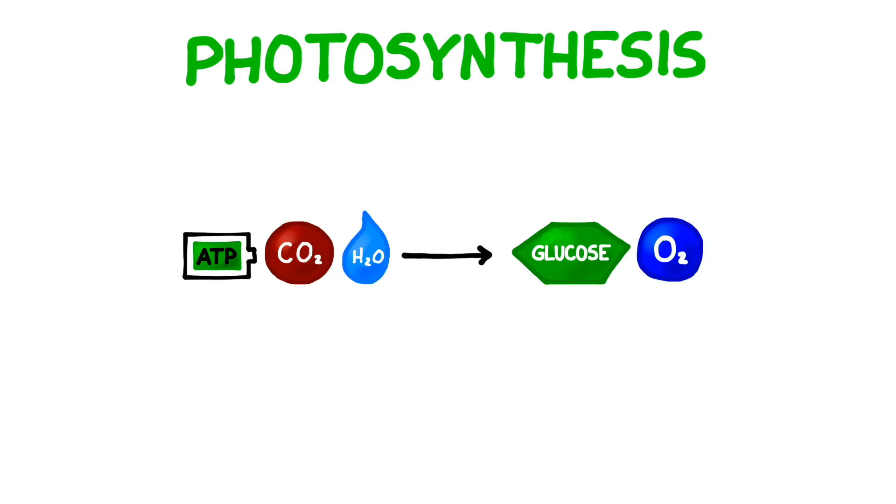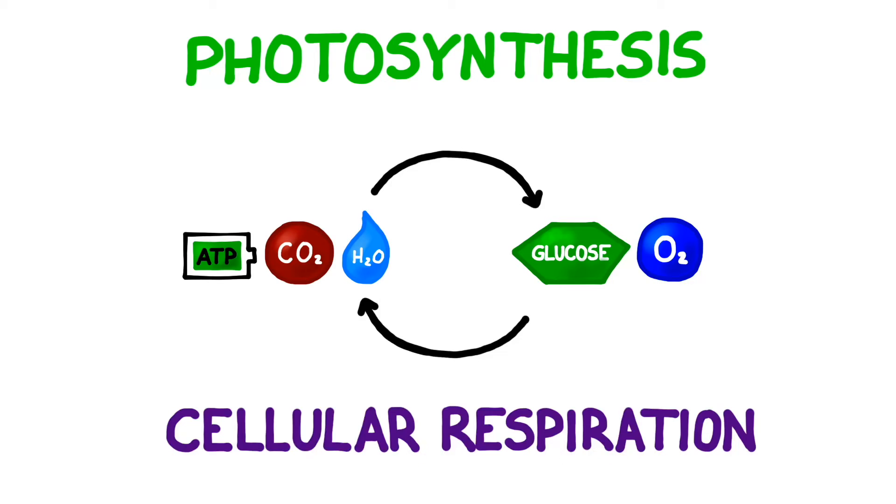In photosynthesis, an organism uses solar or light energy, carbon dioxide, water, and ATP to generate glucose, a very useful sugar, and oxygen. Note the similarities and differences between photosynthesis and cellular respiration. With a few tweaks, the products of photosynthesis become the reagents of cellular respiration and vice versa.